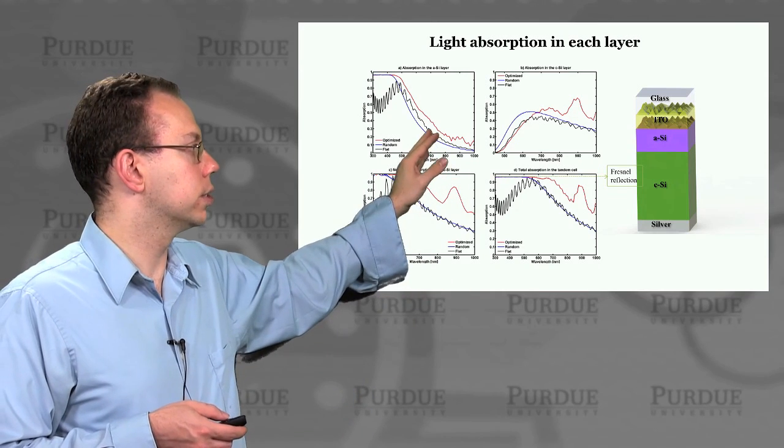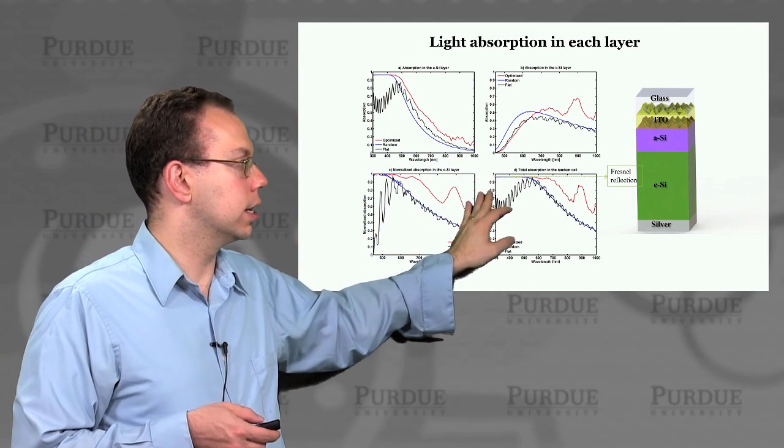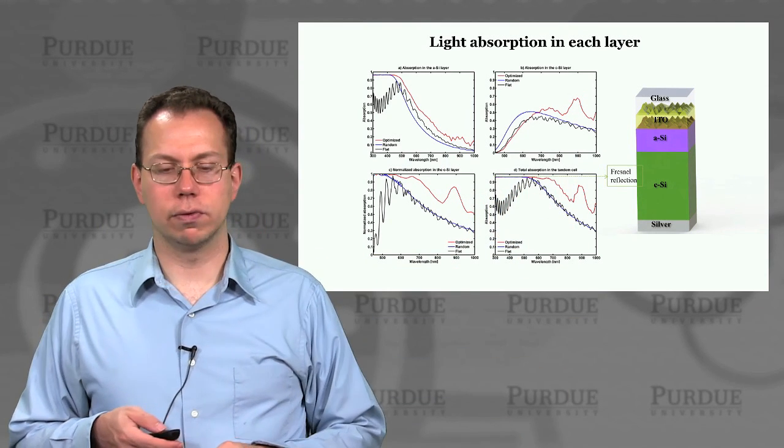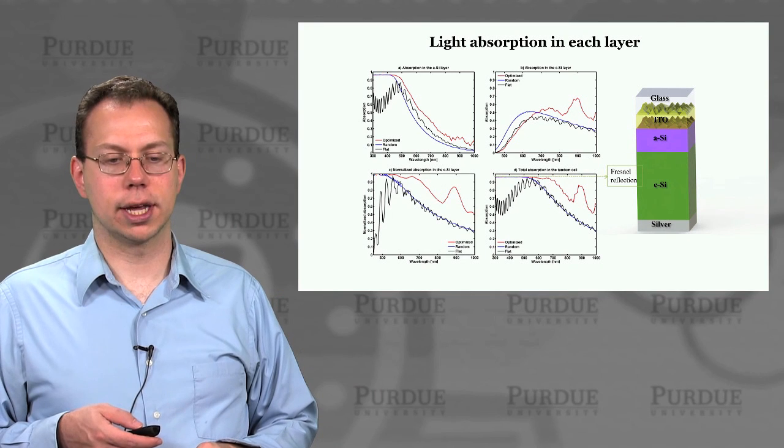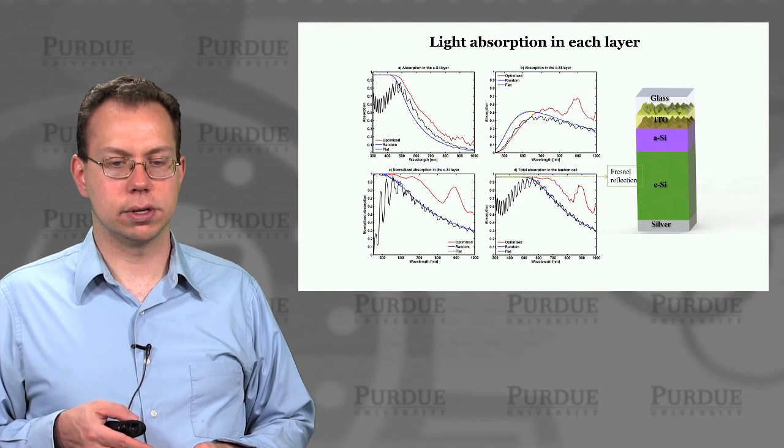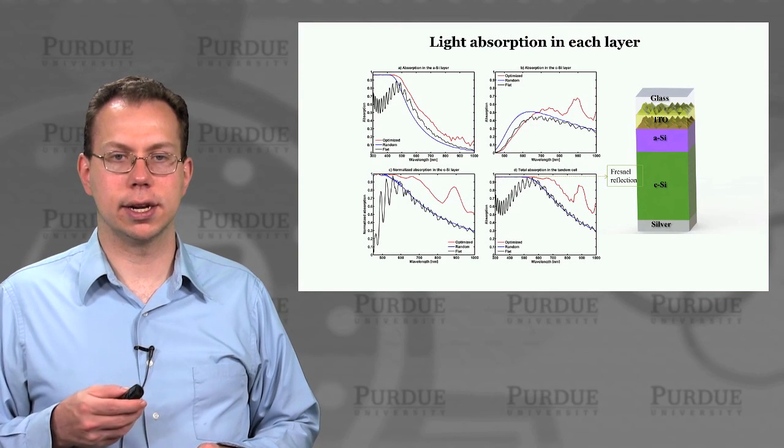And then this actually shows what would be the light absorption in both the amorphous silicon and crystalline silicon layer, and then what's the total absorption of the overall device that you can measure externally in the experiment. In the next lecture we'll talk about more details of perovskite silicon tandems.